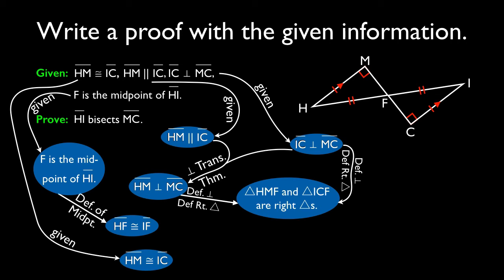That also makes segment HF and segment IF hypotenuses of right triangles. And then we have legs. Oh, wow. By the hypotenuse leg theorem, we know that triangle HMF is congruent to triangle ICF.